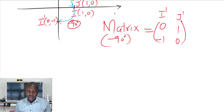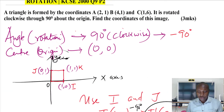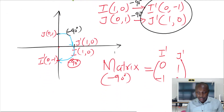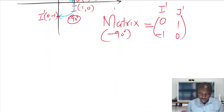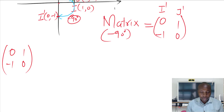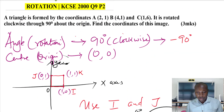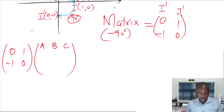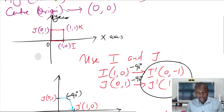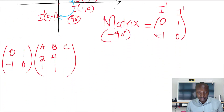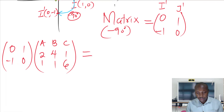Now having this matrix, to get the image we simply pre-multiply our object points with this matrix of transformation. So we take the matrix of transformation [[0,1],[-1,0]] and pre-multiply it with the coordinate matrix of A, B, C — which is [[2,4,1],[1,1,6]]. This should give us A prime, B prime, and C prime.